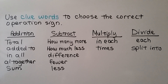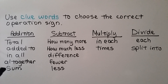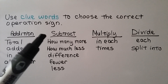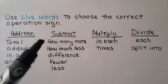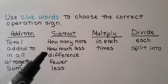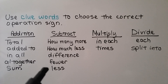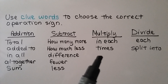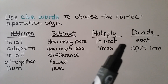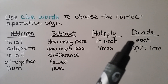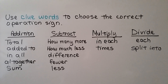We can use clue words to choose the correct operation sign. For addition, we might see: total, added to, in all, altogether, or sum. For subtraction: how many more, how much less, difference, fewer, or less. For multiplication: in each or times. For division: each, split into, or divided by.